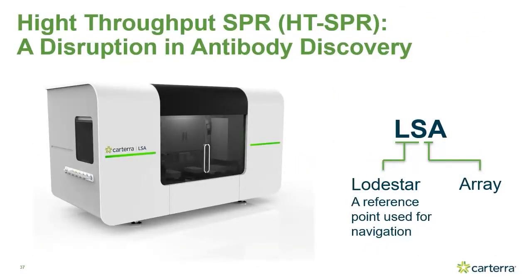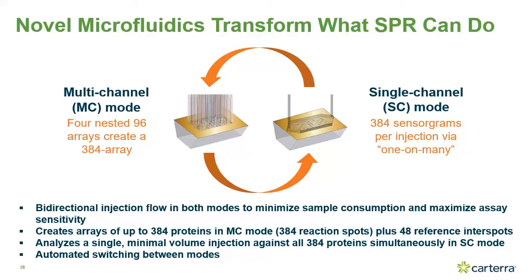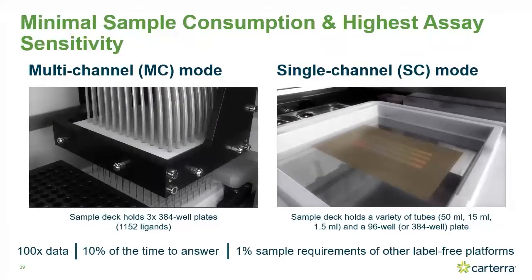Now switching gears to talk about the LSA platform. LSA stands for Lodestar Array, and it is a high-throughput SPR array system. What makes the LSA ideally suited for high-throughput SPR is its two relatively independent fluidic systems that address the same sensor chip surface: a multi-channel mode enabling continuous flow microspotting — also referred to as the print head — capable of up to four nested 96-array prints to create a 384-spot array, and a single channel flow mode that injects one sample over the entire array surface.